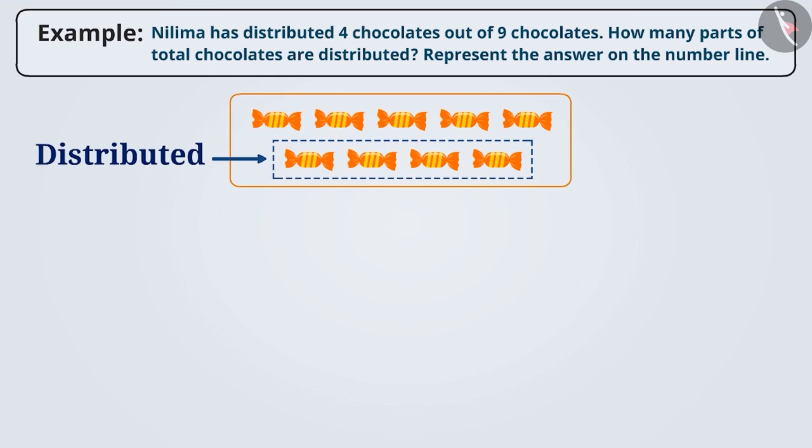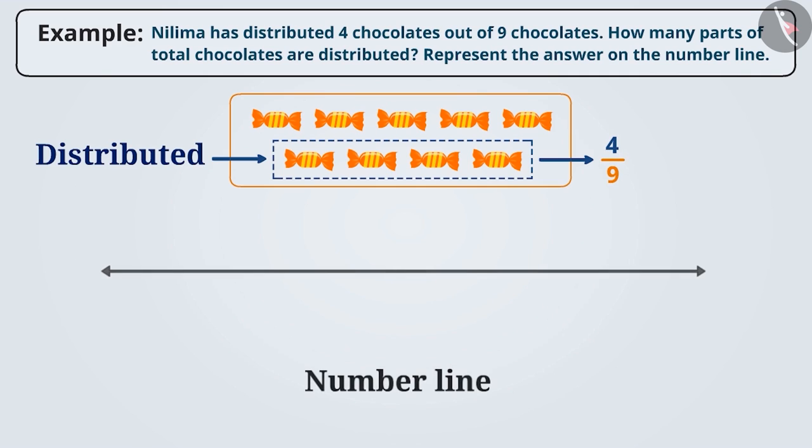Since she distributed 4 out of 9 chocolates, we can say that she has distributed 4 out of 9 parts of all the chocolates she had. To represent this on the number line, first, we will check the denominator of the fraction. Here, the denominator is 9 which tells us that the unit distance should be divided into 9 equal parts.